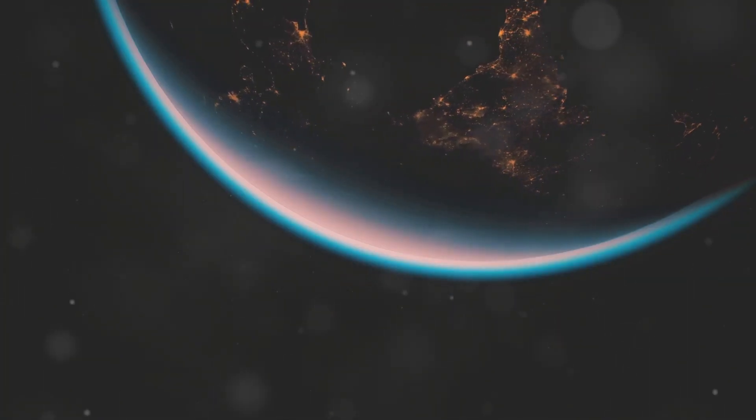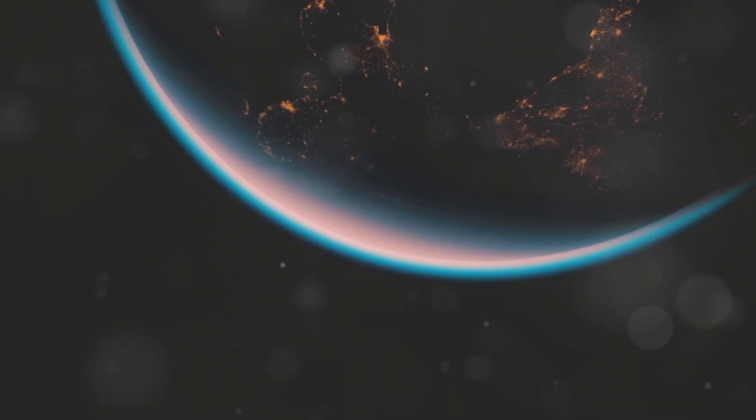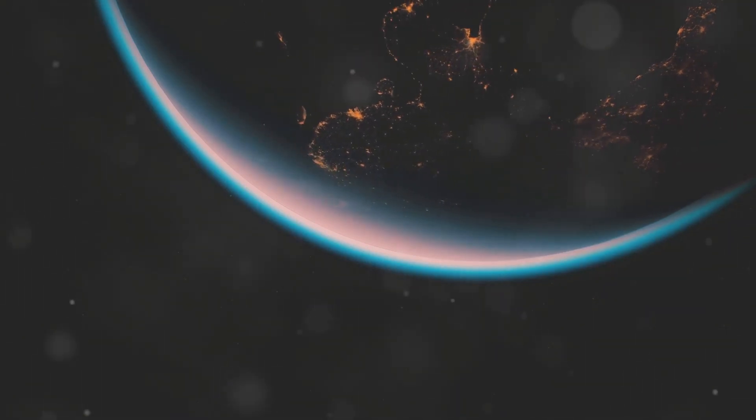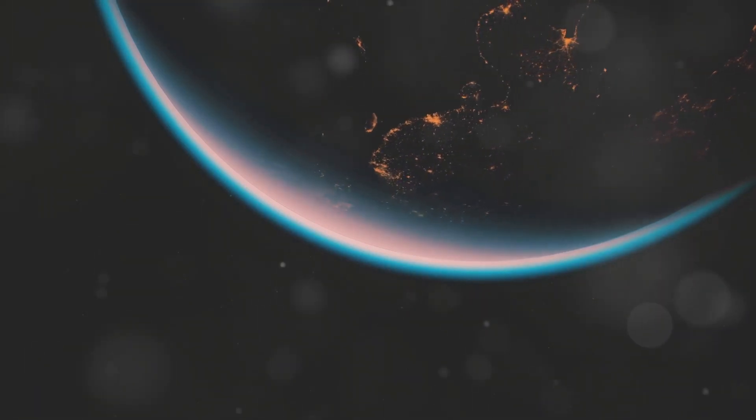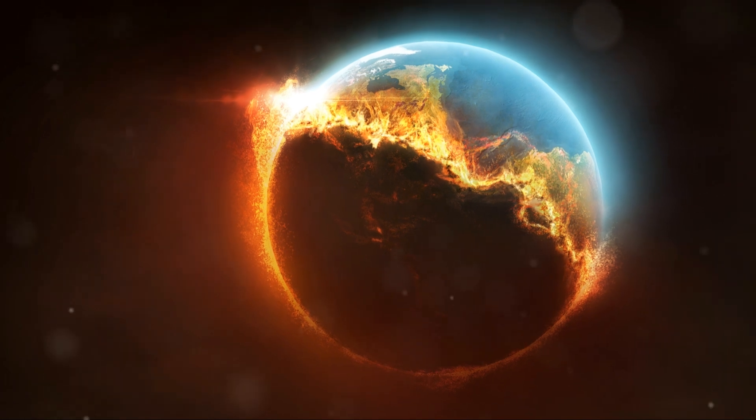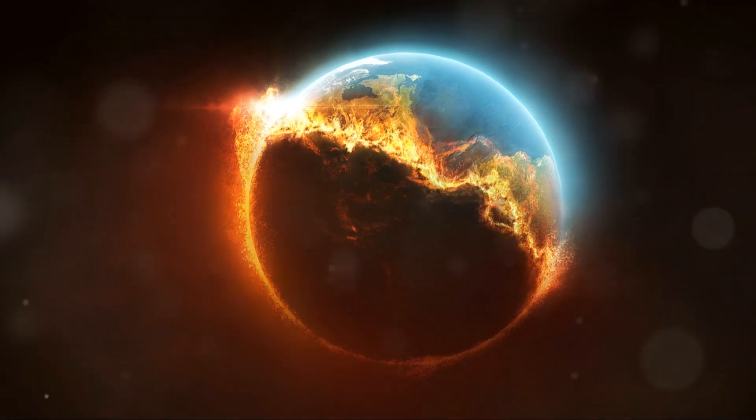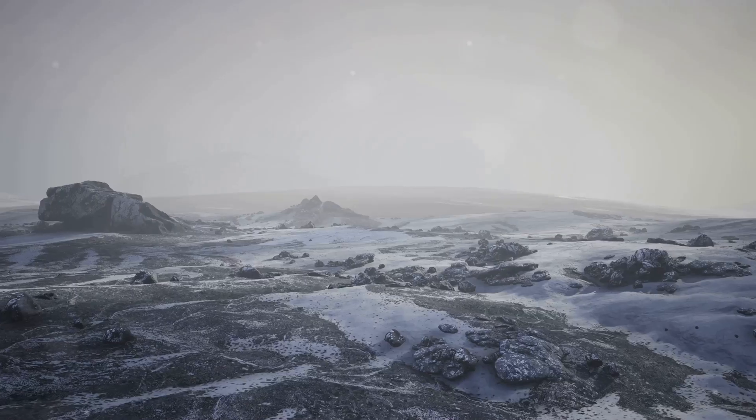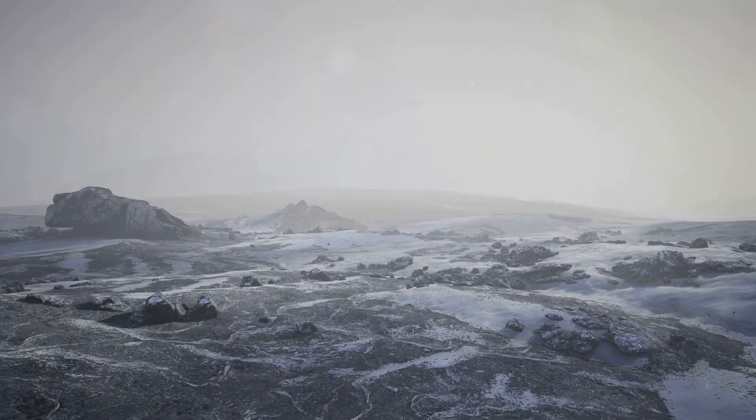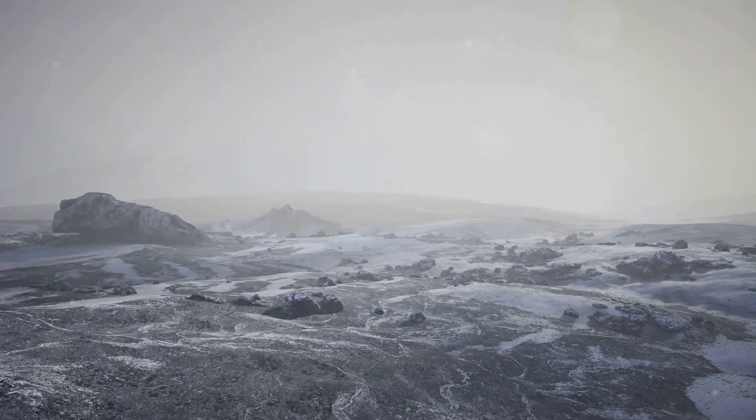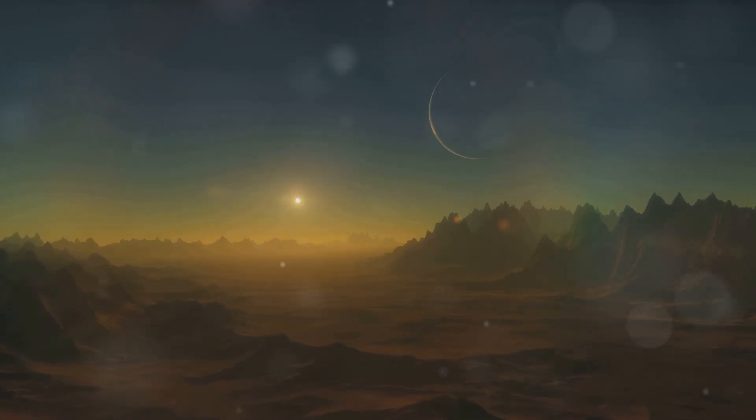55 Cancri-e is tidally locked, meaning one side always faces its star, while the other remains in perpetual darkness. The side facing the star is a scorching inferno, a sea of molten rock and metal. The side facing away is a frozen wasteland, a desolate landscape of ice and rock. And between these two extremes lies a thin sliver of twilight, a region of perpetual sunset where the temperature might be just right for life.